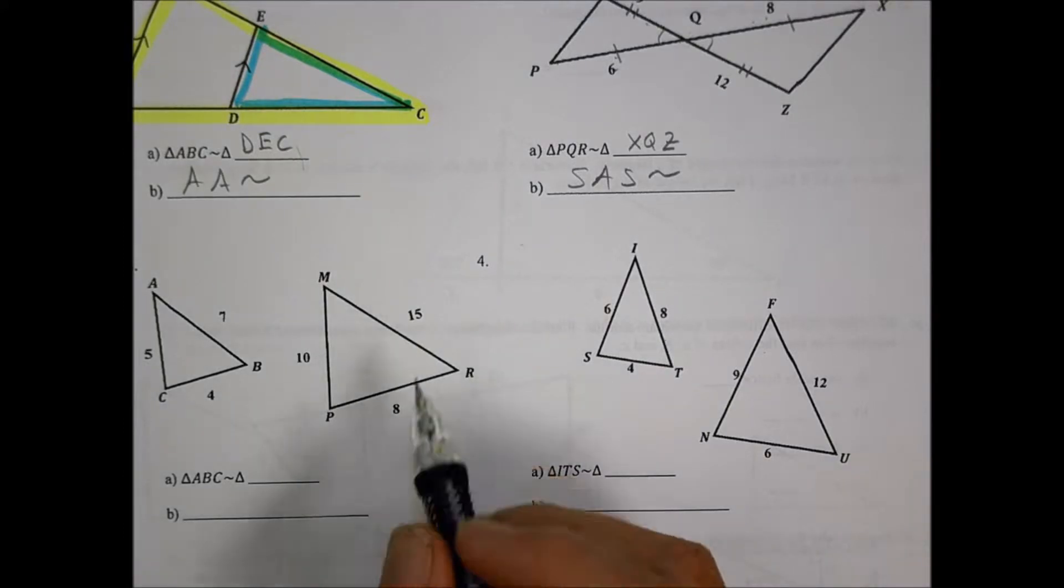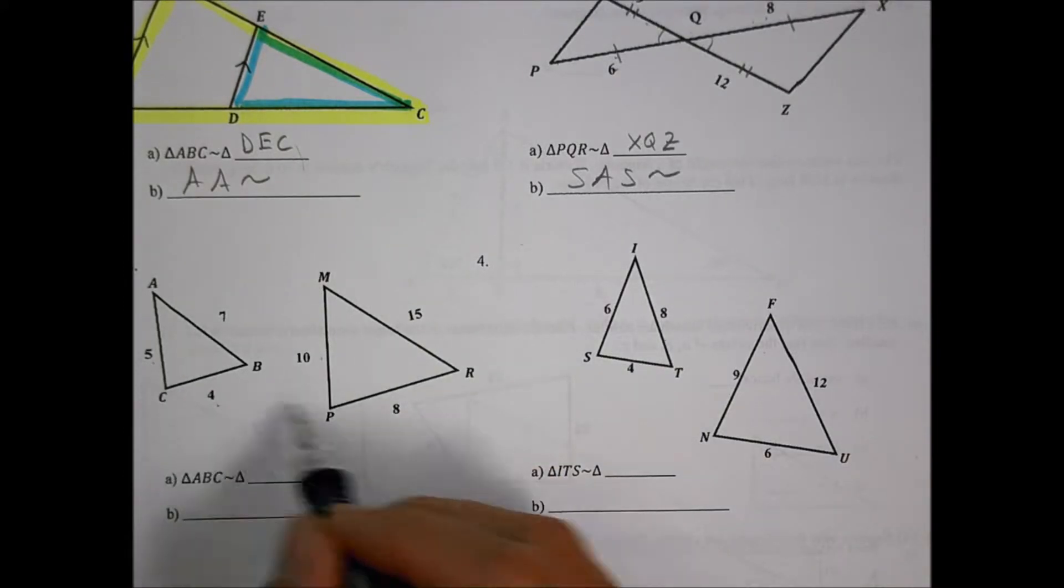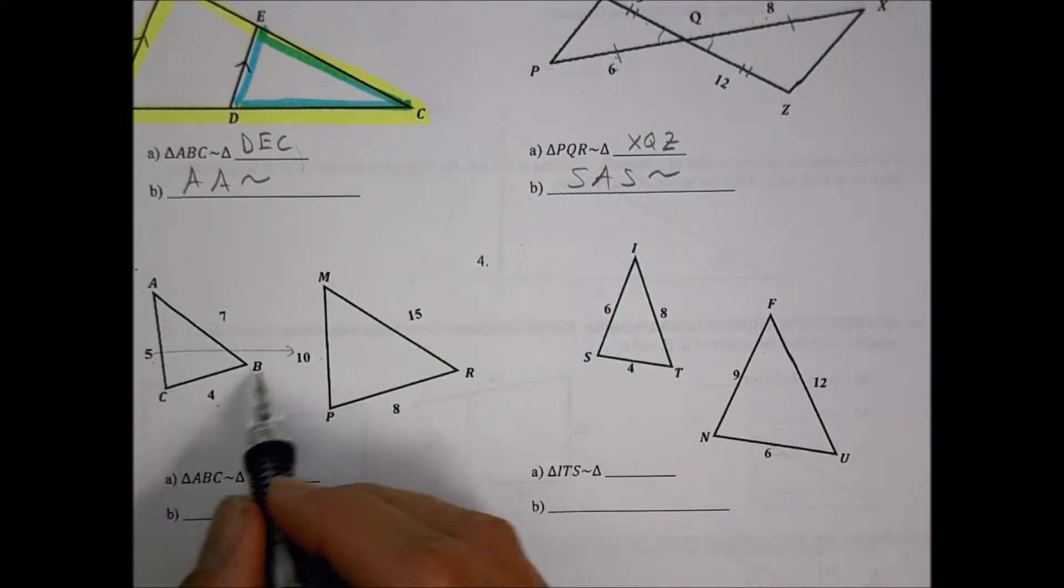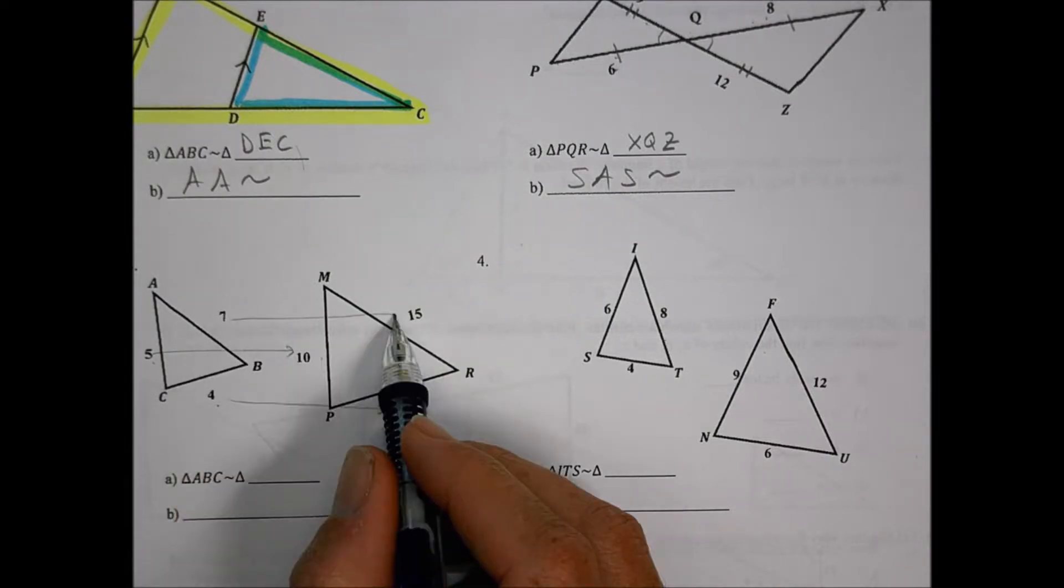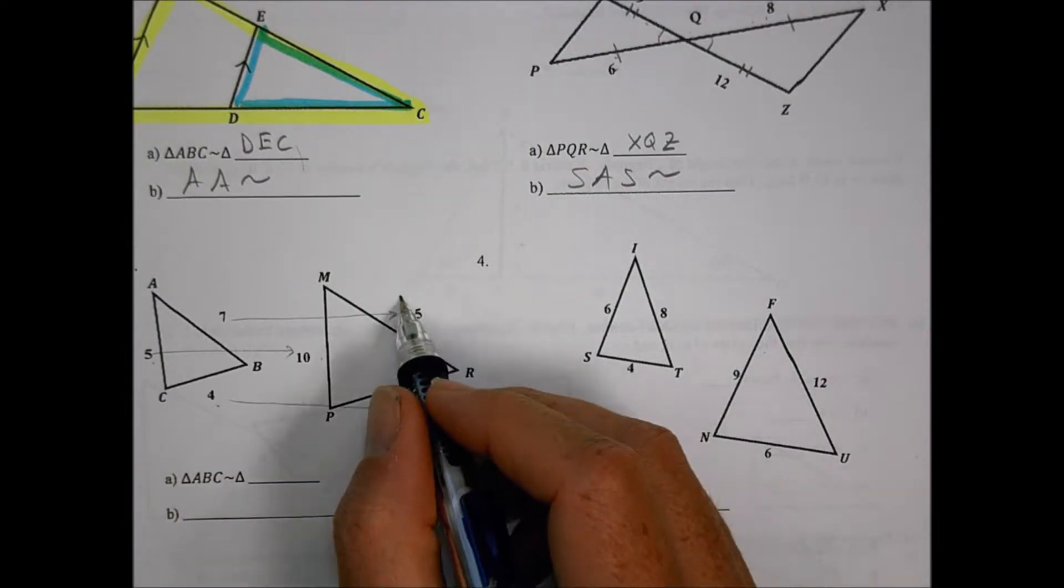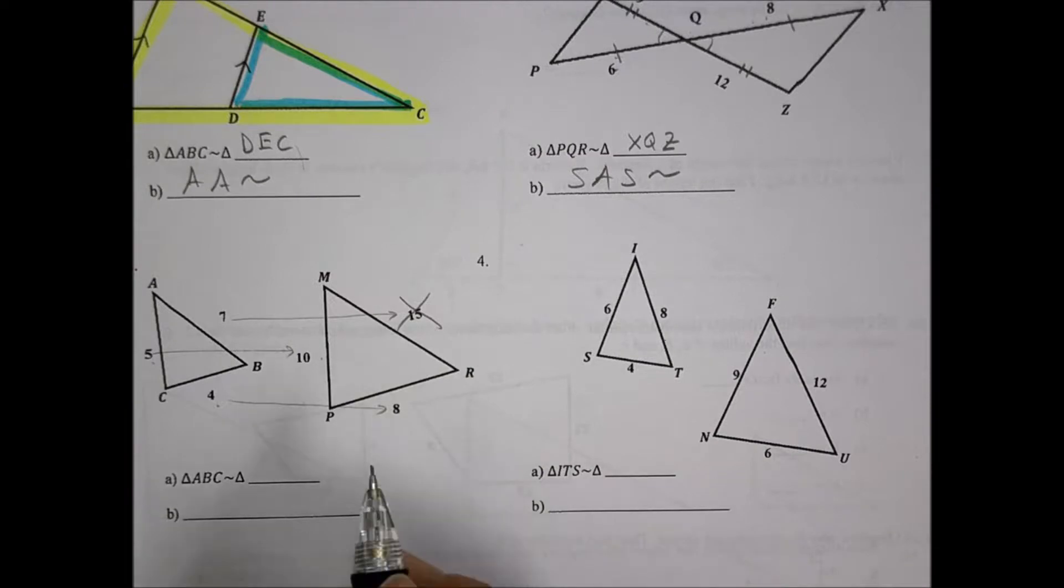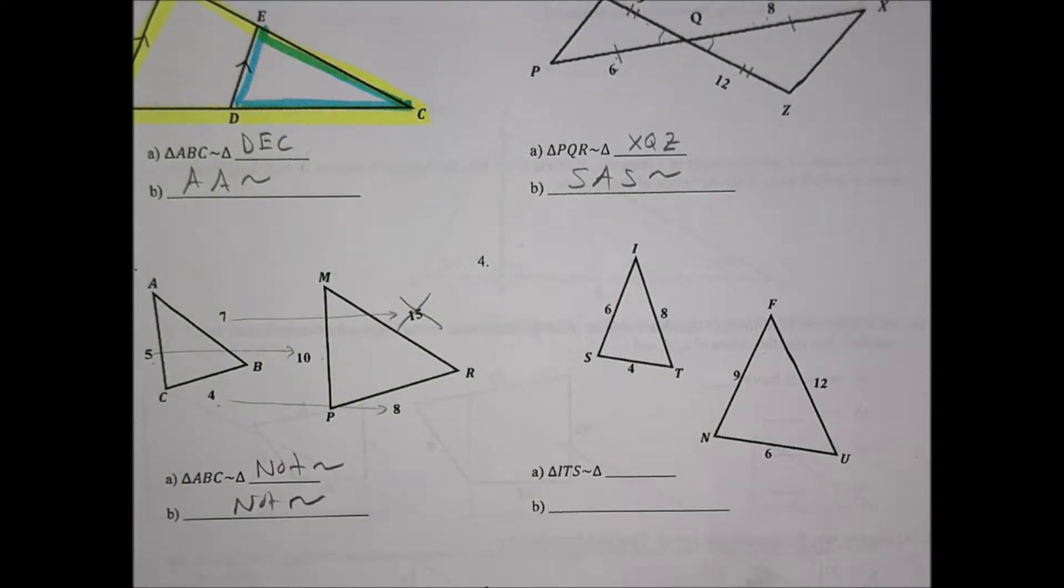Looking at number 3, here I have 5 to 10, 4 to 8, that is times 2, this is times 2, but 7 times 2 is not 15, meaning that is not similar. So we would say it's not similar and leave it right there at that.